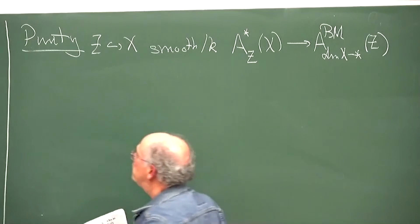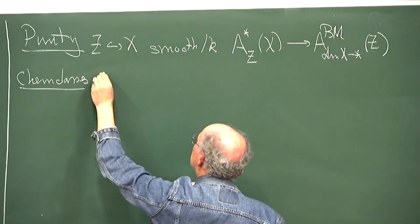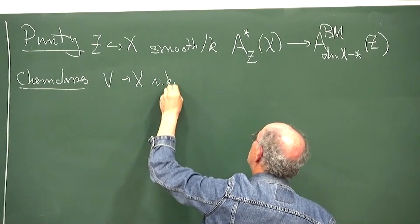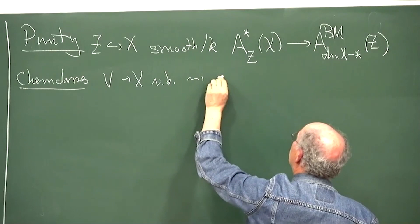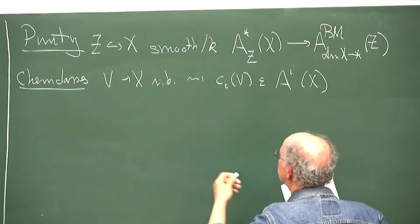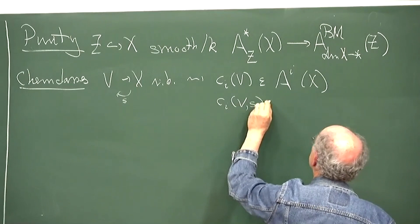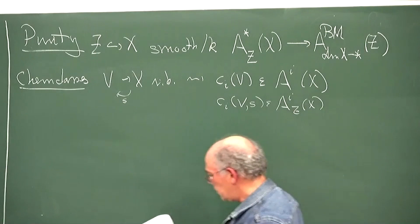You also have Chern classes of vector bundles, and allied with this is the projective bundle formula — that's how you get the Chern classes. If X is smooth, then you have the i-th Chern class of V living in A^i of X. There's also a version with supports: if you have a section, then you have a Chern class for V with support, which is often useful to translate into the Borel-Moore homology.